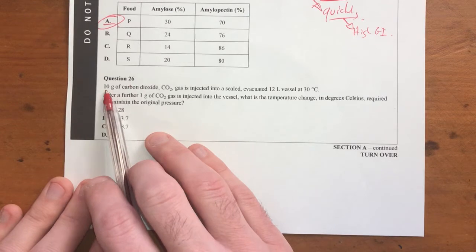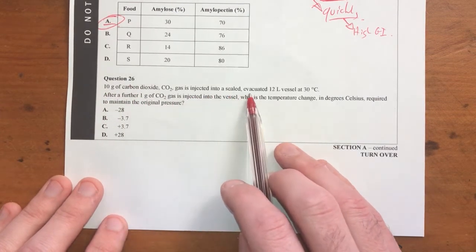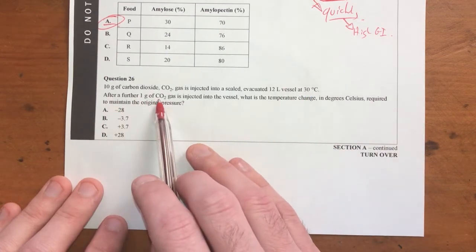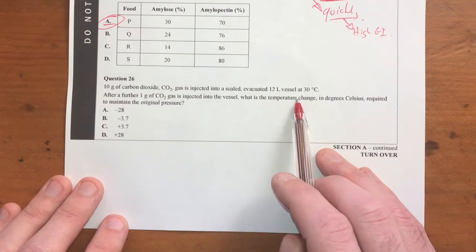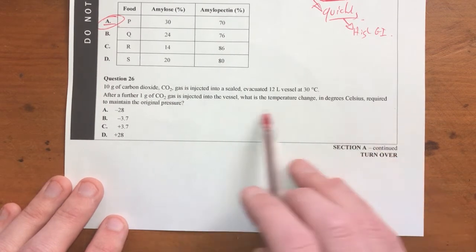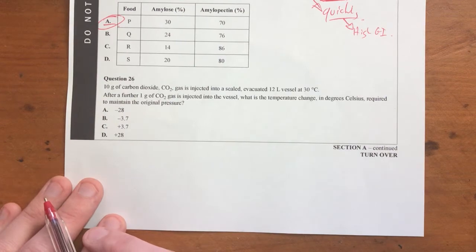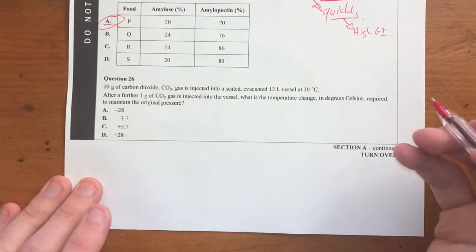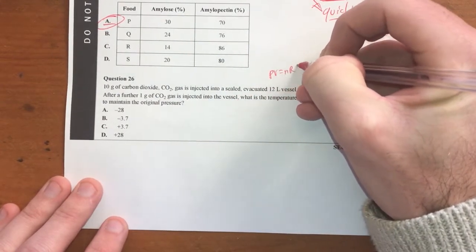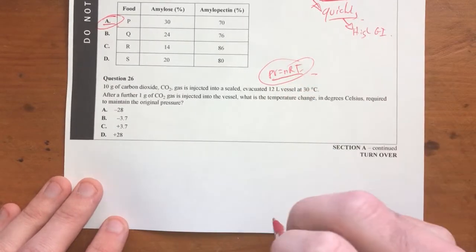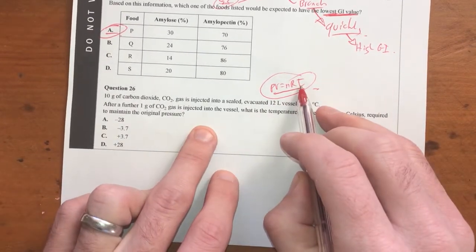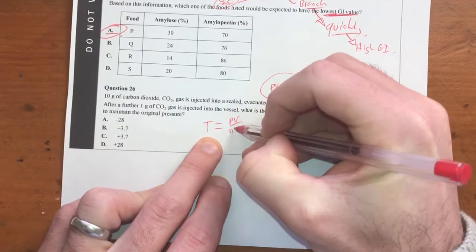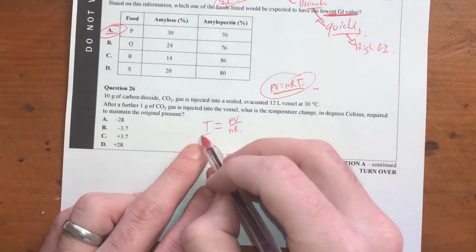Moving into question 26, 10 grams of carbon dioxide is injected into a sealed, evacuated, 12 litre vessel at 30 degrees Celsius. A further 1 gram of carbon dioxide is injected in the vessel. What is the temperature change in degrees Celsius required to maintain the original pressure? Alrighty. So looking at this, I'm giving all this information here, let's call it PV equals NRT. That's what we're going to deal with. So what we need to know is the difference in temperature. So therefore, T is going to be equal to PV over NR. So therefore, we need to know the difference in temperature.